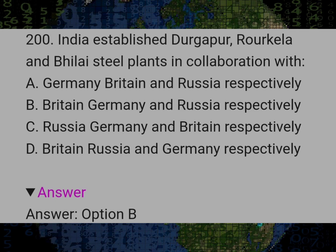India established Durgapur, Rourkela and Bhilai steel plants in collaboration with? Answer B: Britain, Germany and Russia respectively.